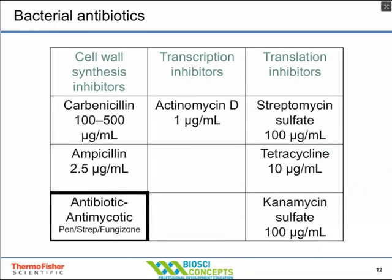In the event you do have a contamination, or choose to grow cells with antibiotics, here are some antibiotics people might use and why they work. The antibiotic anti-anti — the antibiotic-antimycotic containing penicillin, streptomycin, and fungizone — is probably the most widely used antimycotic out there right now and works pretty well. Good cell culture practice, however, does not grow cells in antibiotics — certainly not all the time.